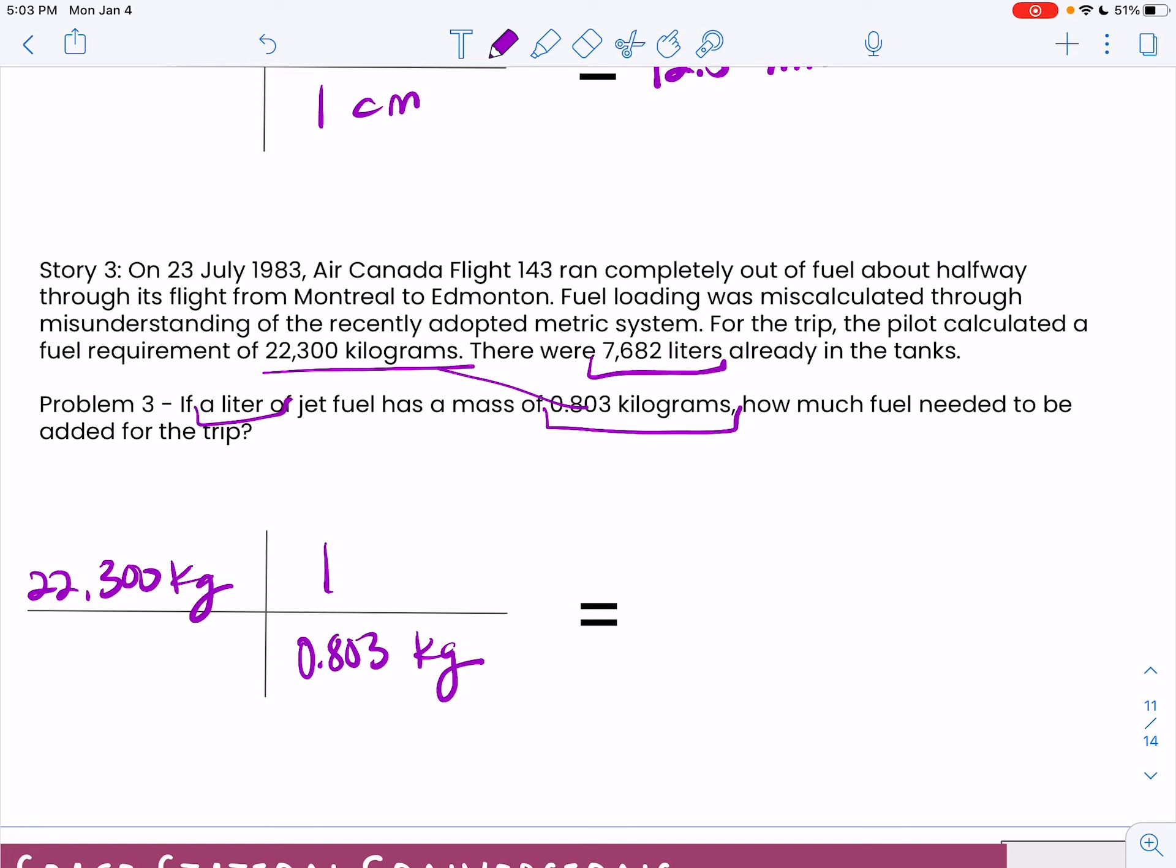Kilograms, and that's worth one liter, that's a capital L. So now I'm going to have 22,300 times one divided by 0.803. So what he really needed was 27,770.9 liters of fuel. So 22,300 kilograms is equal to 27,770 liters.